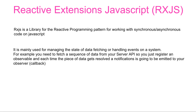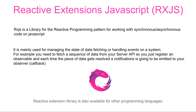The main use of RxJS is for managing the state of data fetching or handling events on a system. For example, you need to fetch a sequence of data from your server API — not just one single piece, but a sequence executed one after the other. You can register an observable, which is something that can be observed, and each time a piece of data gets resolved, a notification is emitted or pushed to your observer — a simple function callback that receives that data.